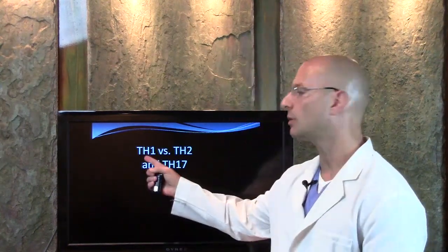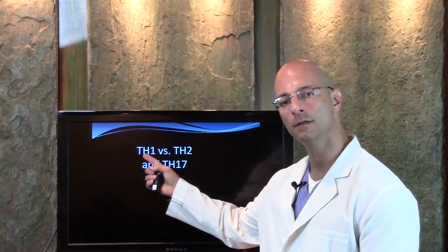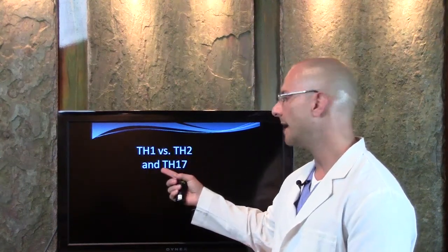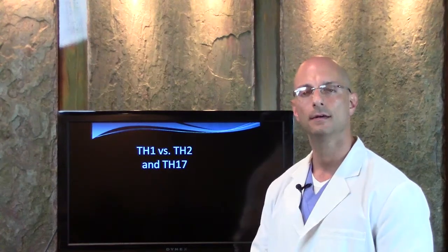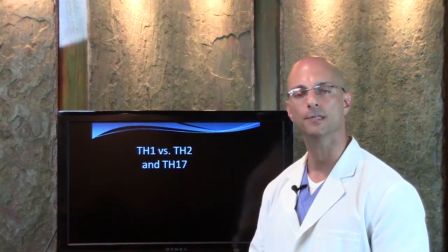There's one called the TH1, also known as a T helper 1, a TH2, and a TH17 type of imbalanced immune system.